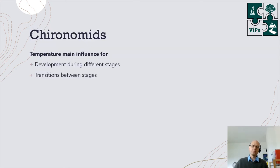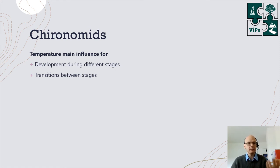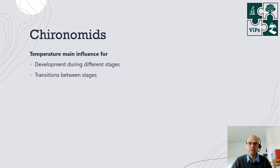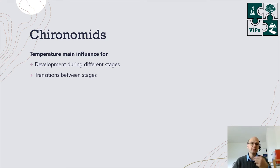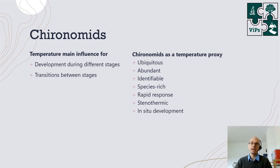So we can use fossilized chironomid larvae found in lake sediments to reconstruct what the past chironomid fauna of a lake must have been like. Now, why do we specifically go for temperature as a research aim? That is because temperature is a main influence on the development of chironomids during individual life stages, specifically during the larval stage. Temperature is also a driving factor for transitions between life stages — for instance, pupation is very strongly driven by light intensity and temperature.